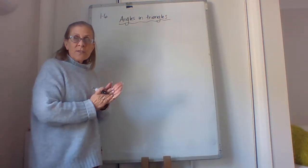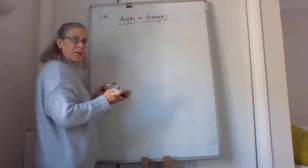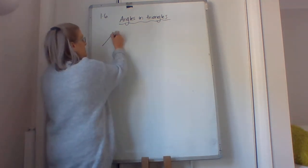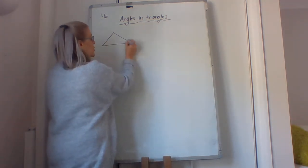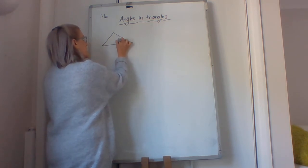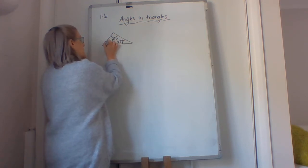So looking at angles and triangles, the easy one we got way back when was some sort of triangle. You were given two angles, so this one is 35, this one is 100. What is this one?